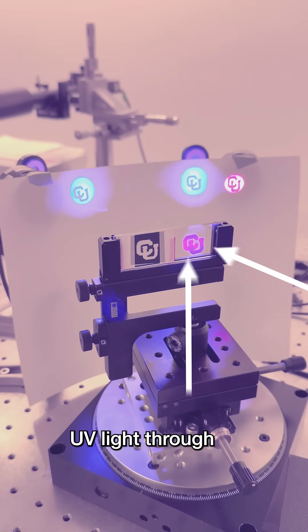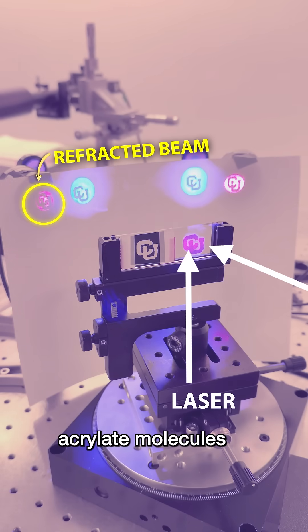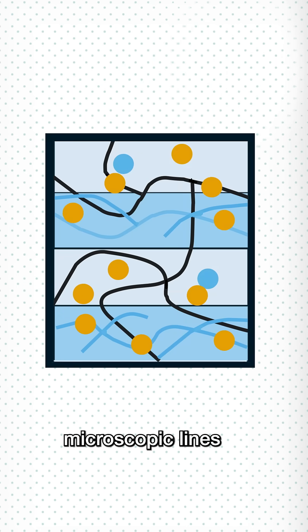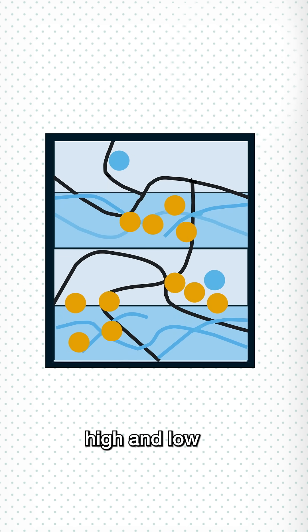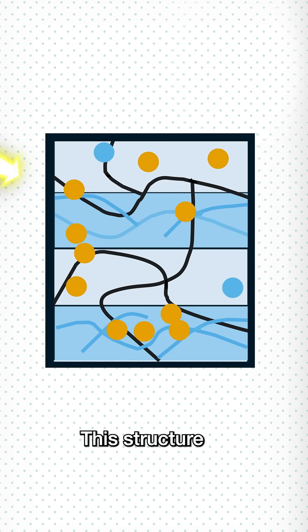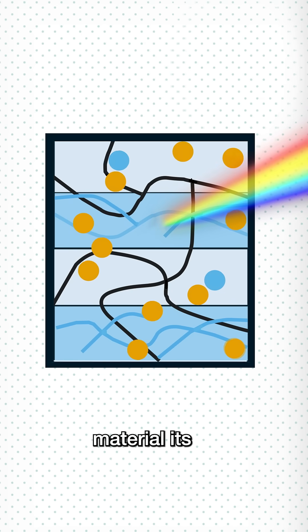Scientists shine patterned UV light through the film, which makes the acrylate molecules polymerize where the light is most intense. Free acrylate flows to those areas, creating microscopic lines with alternating high and low refractive indexes. This structure diffracts light, giving the material its rainbow shimmer.